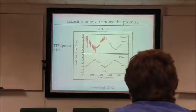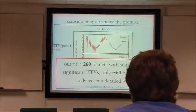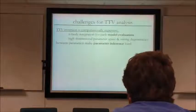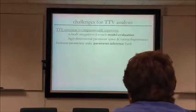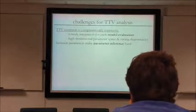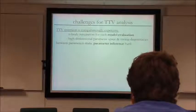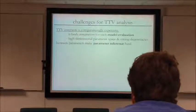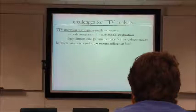That's the promise of transit timing variations. But despite this promise, out of something like 260 planets in the Kepler dataset that show TTVs, only a small fraction have been analyzed in detail. The first reason is that the TTV inversion process — going from TTV data to parameter constraints — is computationally expensive. The simplest approach requires an n-body integration for every model evaluation: you take model parameters as initial conditions, integrate forward in time, and compare the computed transit times to the data. That's computationally expensive, and there are strong degeneracies between parameters in a high-dimensional space with seven parameters per planet.